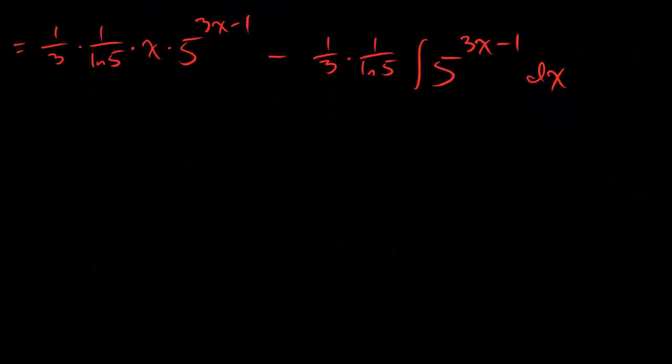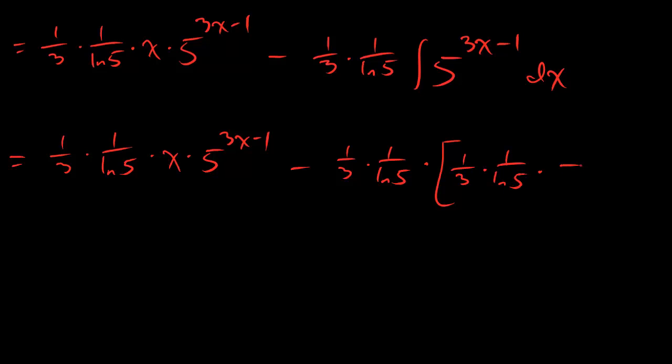So let's go ahead and write that in because we're going to get the exact same thing here. And if you want to do the u-substitution from scratch, hey, be my guest, I ain't going to stop you. So here's what we get. 1 third, 1 over ln 5, x, 5 to the 3x minus 1, minus 1 third, 1 over ln 5, times the anti-derivative, and that's again going to be a 1 third, 1 over ln 5, 5 to the 3x minus 1.